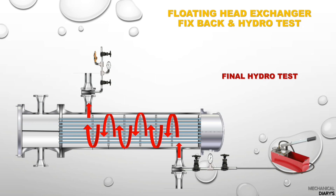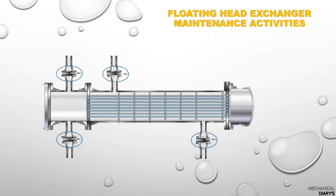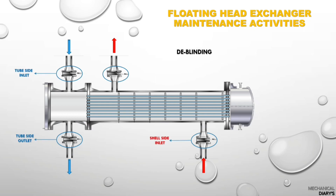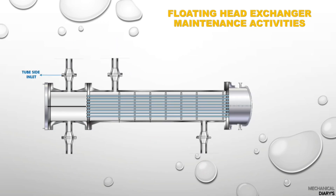Get clearance from operations and proceed to the next activity: de-blinding. As mentioned earlier, blinding starts from the inlet, so de-blinding should start from the outlet only — this reduces risk. After de-blinding, hand over the equipment to operations. If the exchanger feed is hydrocarbon or hydrogen, operations will first perform nitrogen purging before introducing feed to the exchanger.